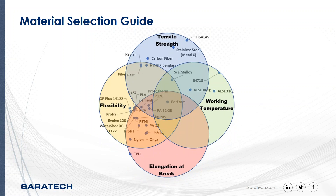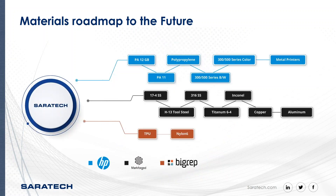Here's another chart we've compiled of all the material offerings for our Saratech ecosystem. We found that these four points represent the main interests when selecting the proper material for your solution: tensile strength, working temperature, elongation and break, and flexibility. As you can see, we have a material selection that will fit every additive manufacturing need.